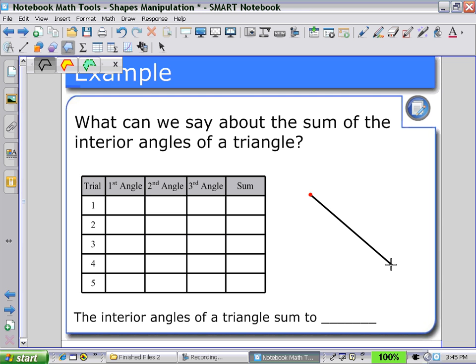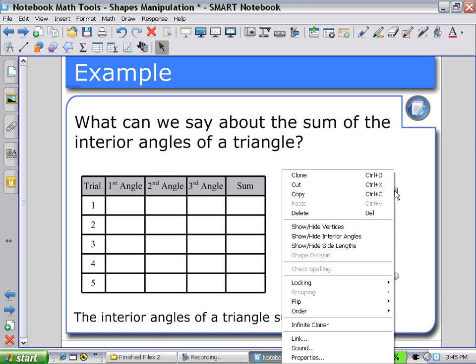Drawing three vertices, selecting the shape, using the arrow pull down menu, show and hide the interior angles.